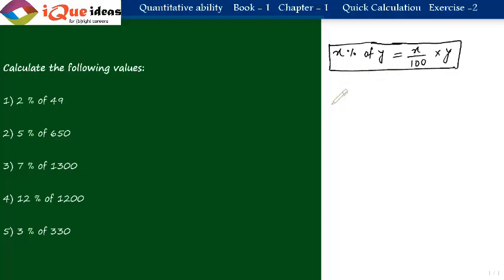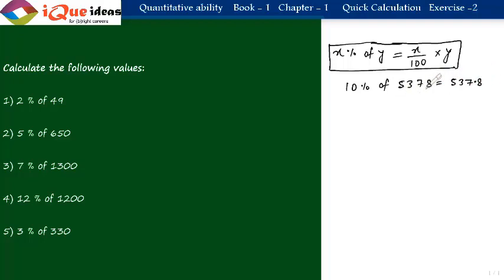For example, to find 10 percent of 5378, go to the end of the number, leave the last one digit, and place a decimal. So it becomes 537.8. Basically, what you are doing is dividing the given number by 10. So 10 percent is one-tenth of the number.